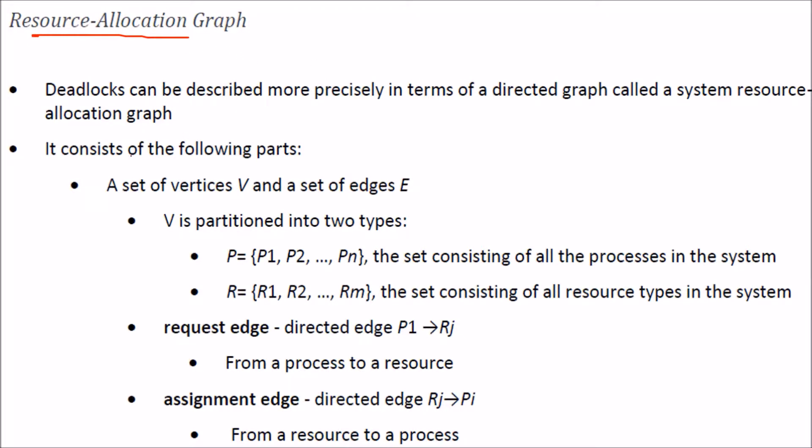In this resource allocation graph, it consists of certain parts because we know that a graph consists of vertices and edges. Vertices are partitioned into two types: first is your process and then you have resource.